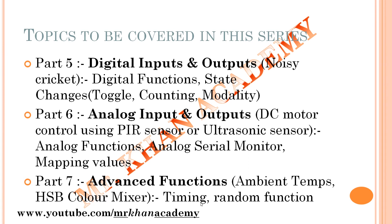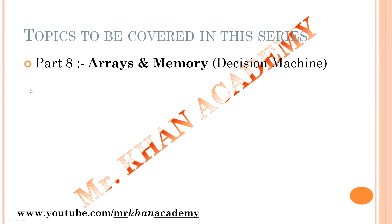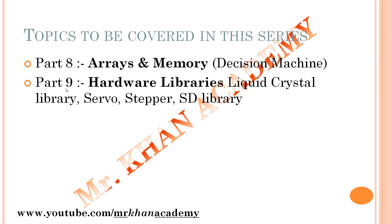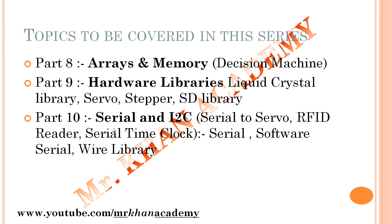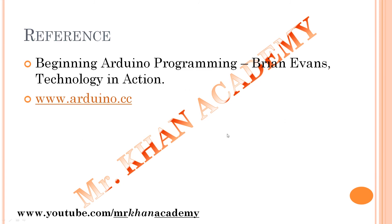Part 7 covers Advanced Functions: timing with the delay command in detail, and random functions with ambient temperature software and an HSB color mixer. Part 8 covers Arrays and Memory — defining arrays, reading values from arrays, and different memory types in Arduino — with a Decision Machine project. Part 9 covers Hardware Libraries: LiquidCrystal, Servo, Stepper, and SD libraries. Part 10 covers Serial and I2C communication — serial to servo, RFID reader, servo time clock — using Serial, Software Serial, and Wire libraries.